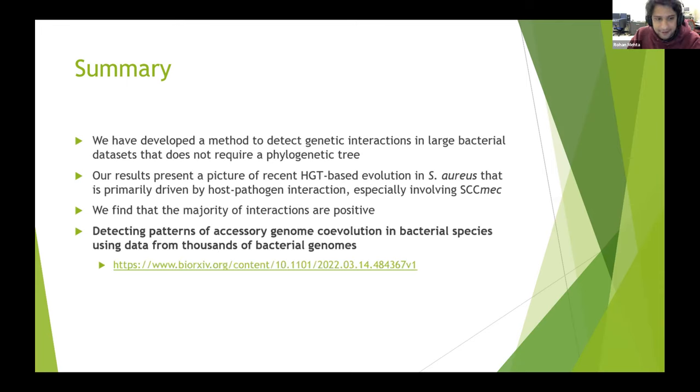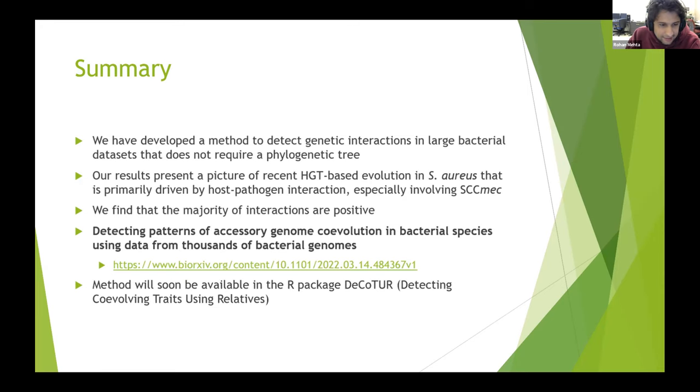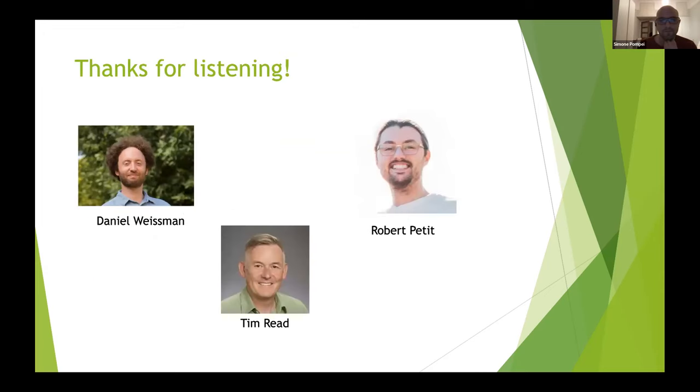There's a preprint available online. The method I'm currently writing in an R package, which is going to be called DECODER—Detecting Co-evolution Traits Using Relatives—should be available soon to enable this computation in general. Thanks for listening. These are my advisors and collaborators. Again, thanks for bearing with me for my scheduling mishaps for this workshop.